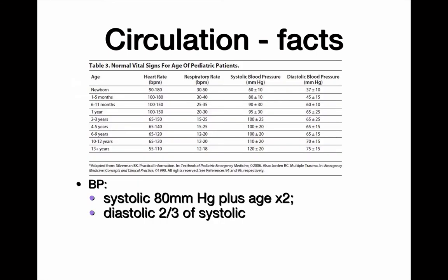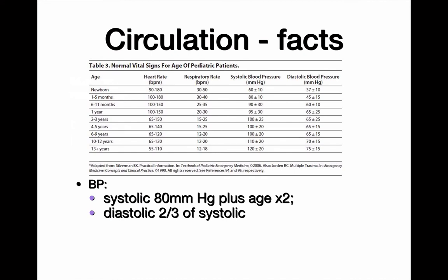The diastolic is two thirds of the systolic. The way I calculate it: 80 plus age times two gives the systolic, and two thirds of that is the diastolic. It's very simple. I personally learned this formula as an intern. In the trauma bay, the chart is just too much — I just ask the age and do the calculation in my head.